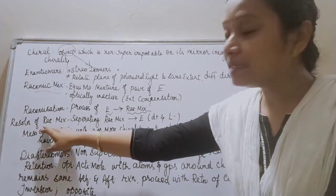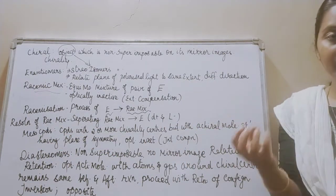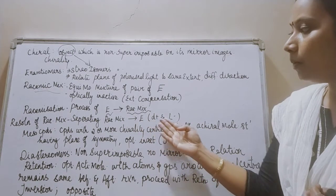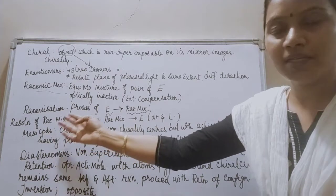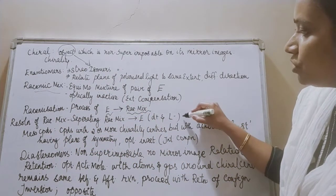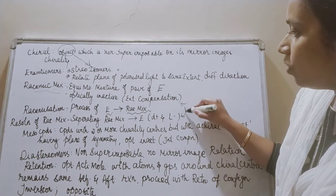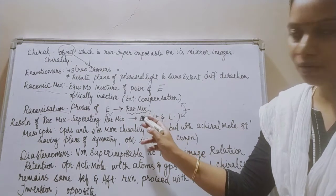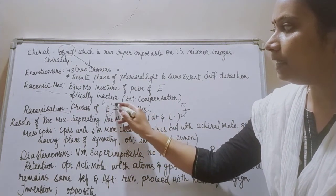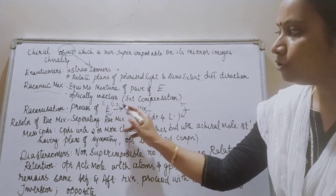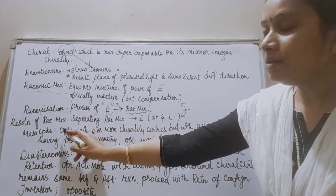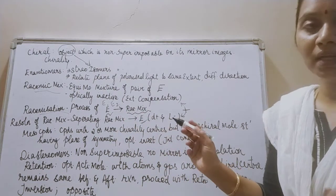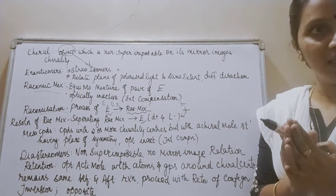What is resolution of a racemic mixture? Resolution means separating. I am going to separate the racemic mixture into individual enantiomers — as dextrorotatory compounds and levorotatory compounds — and that is called resolution of racemic mixture. Resolution is just the opposite of racemization: racemization means joining enantiomers E1 and E2 to give a racemic mixture, while resolution means separating enantiomers from the racemic mixture as dextrorotatory and levorotatory. So racemization and resolution are opposite processes.